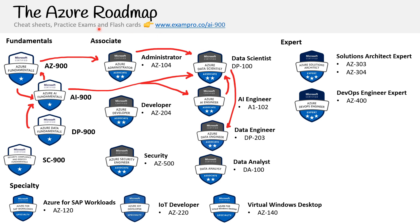If you already have the AZ-900 and an associate cert, you can safely go straight to the data scientist if you want to risk it, because that one is really hard. If you've passed the AZ-104, you'll probably have a lot more confidence with this foundational material. But it's always recommended to grab the foundational certs, because sometimes course materials don't cover everything and the obvious stuff gets left out.